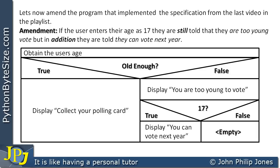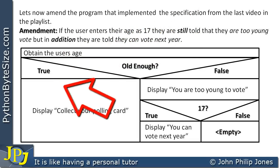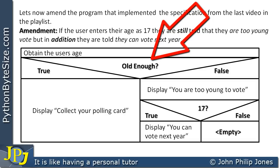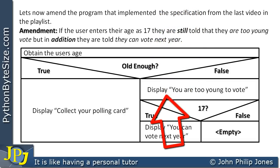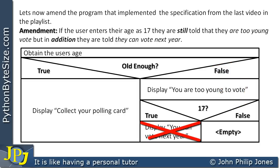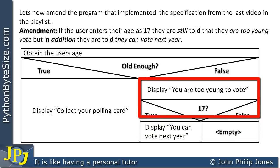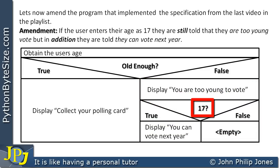Let's trace through some examples. If the user enters 18, we ask 'are you old enough?' — the answer is true, so we display 'collect your polling card'. Now entering 16: we ask 'are you old enough?' — false, so we display 'you are too young to vote', then ask 'are you 17?' — no, they're 16, so false, and we don't execute that step. Entering 17: 'are you old enough?' is false, so we display 'you are too young to vote', then ask 'are you 17?' — yes, so we display 'you can vote next year'.